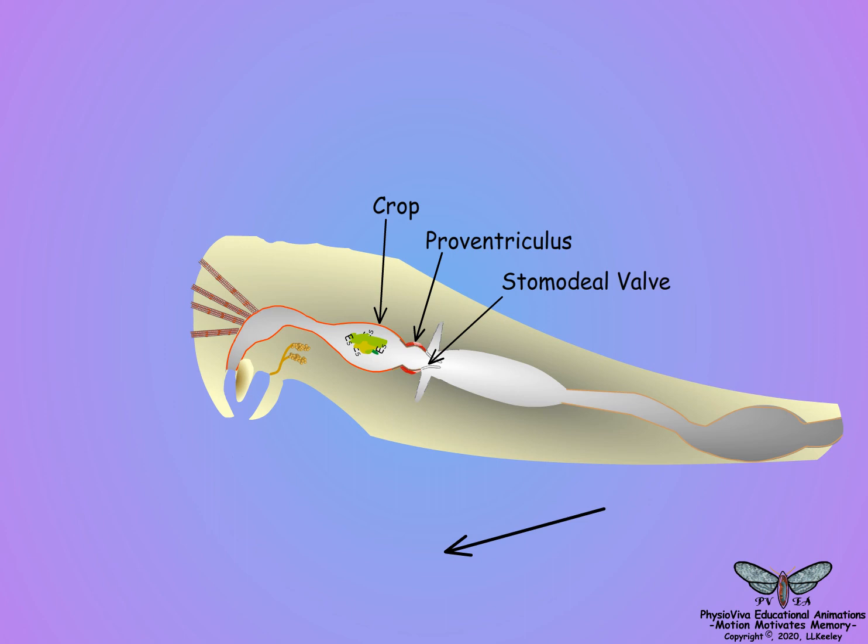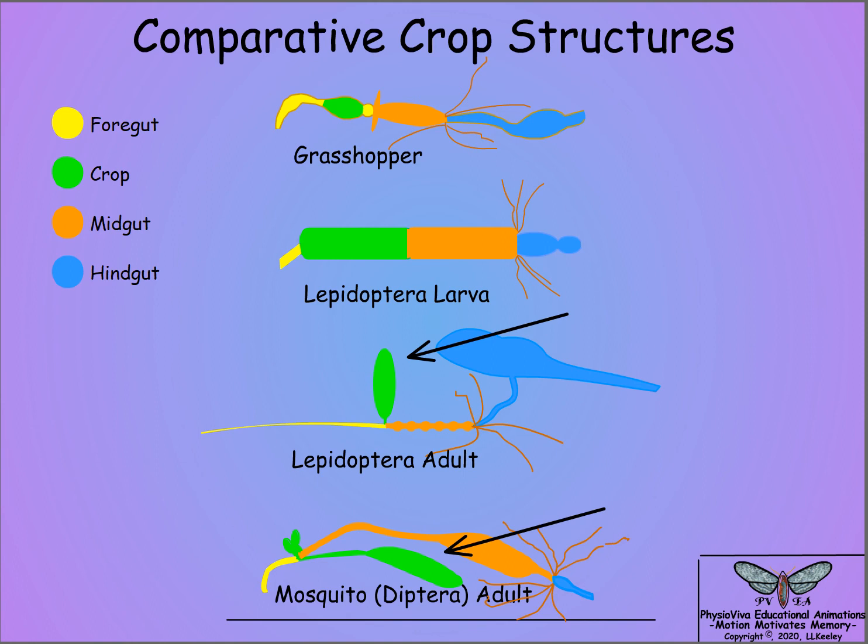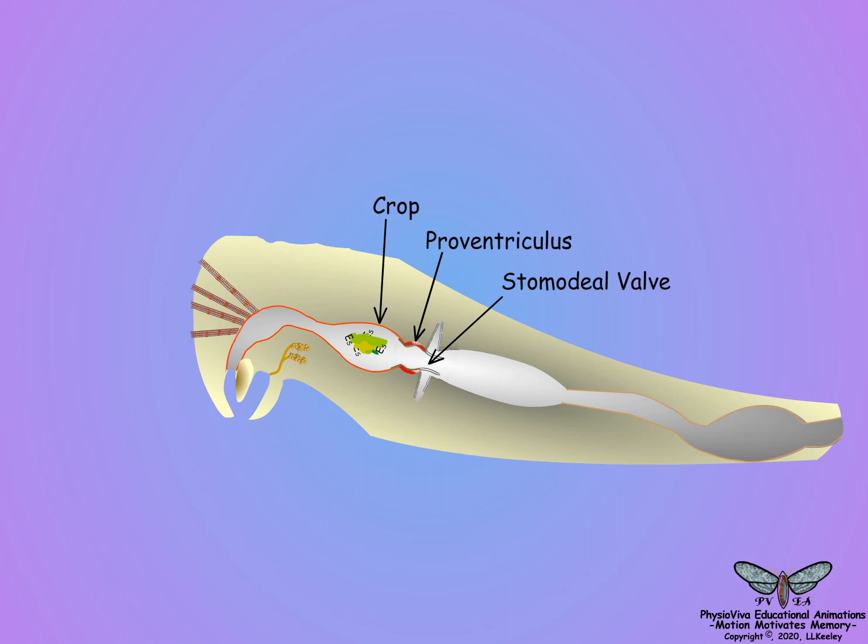The crop can be a lateral diverticulum-like structure in some species, such as the adults of Diptera and Lepidoptera, where the crop has the capacity to expand and store a large volume of liquid food. Between the crop and midgut is the proventriculus.